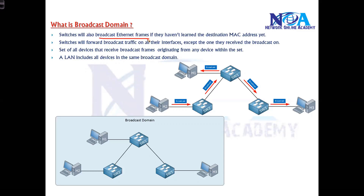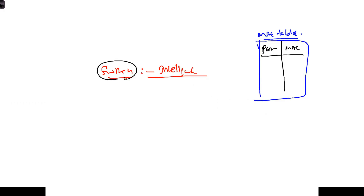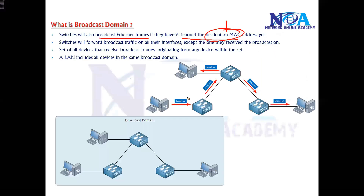Switches will forward Ethernet frames when they don't know the destination MAC address. The switch is an intelligent device — it maintains a MAC table, which you can verify using 'show mac-address-table'. That table records which MAC address is connected on which port. If the destination MAC entry is present, the switch forwards it as a unicast on that particular port. If it is not present, the switch does flooding — it broadcasts out of all interfaces.